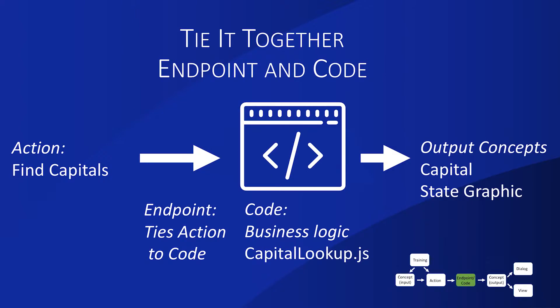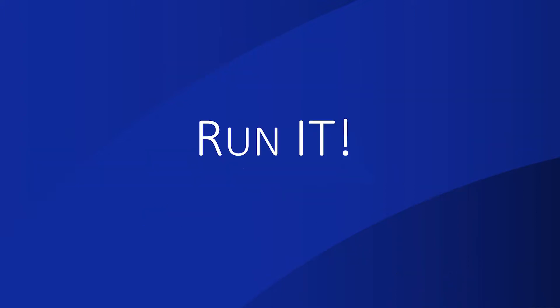So how do we tie all this together? We have our input, we have our output — what do we do in the middle? We need to create two things. One is an endpoint, which models taking that action and calling our logic. Then we actually need to write our logic — our business code — and we do that in JavaScript. CapitalLookup.js is our logic for taking the state as input, finding the capital, and putting it into that output concept. With that, we've actually talked about enough to get a basic Bixby capsule running.